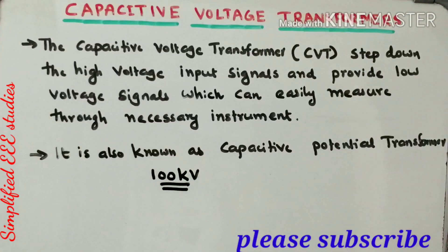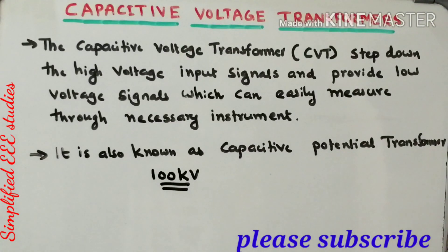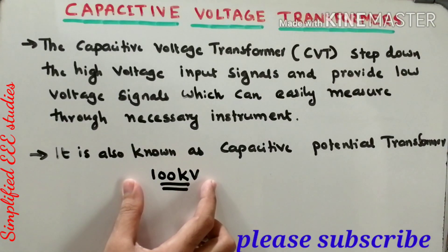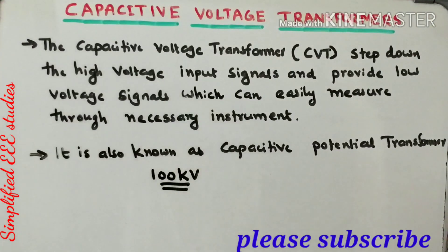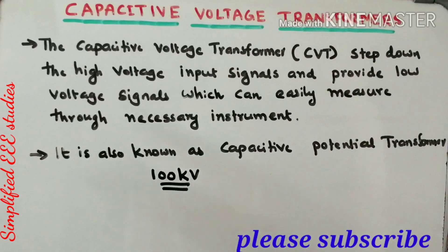It is possible to measure high voltage using instrument transformers such as CT or PT. But the main problem is if you want to measure voltage above 100 kV, we need to provide a very high amount of insulation on those instrument transformers, which is not economically feasible. That is why we mainly depend on the capacitive voltage transformer, or CVT.